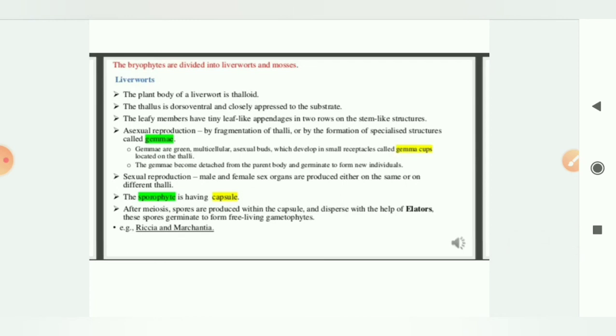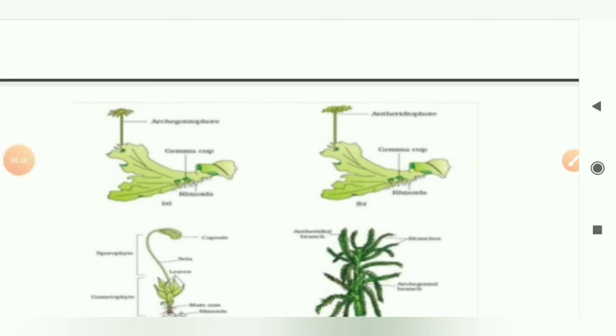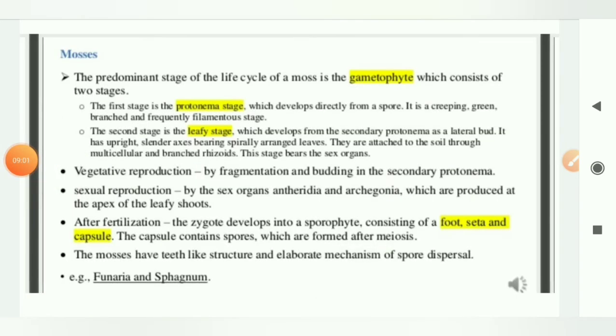Examples are Riccia and Marchantia. This is our Marchantia, and Riccia also looks like this only. Here you can see gemma cups are there, then rhizoids are there, then archegonium is there and antheridium. Archegonium is female sex organ and antheridium is male sex organ. So I hope so that you are getting the things.